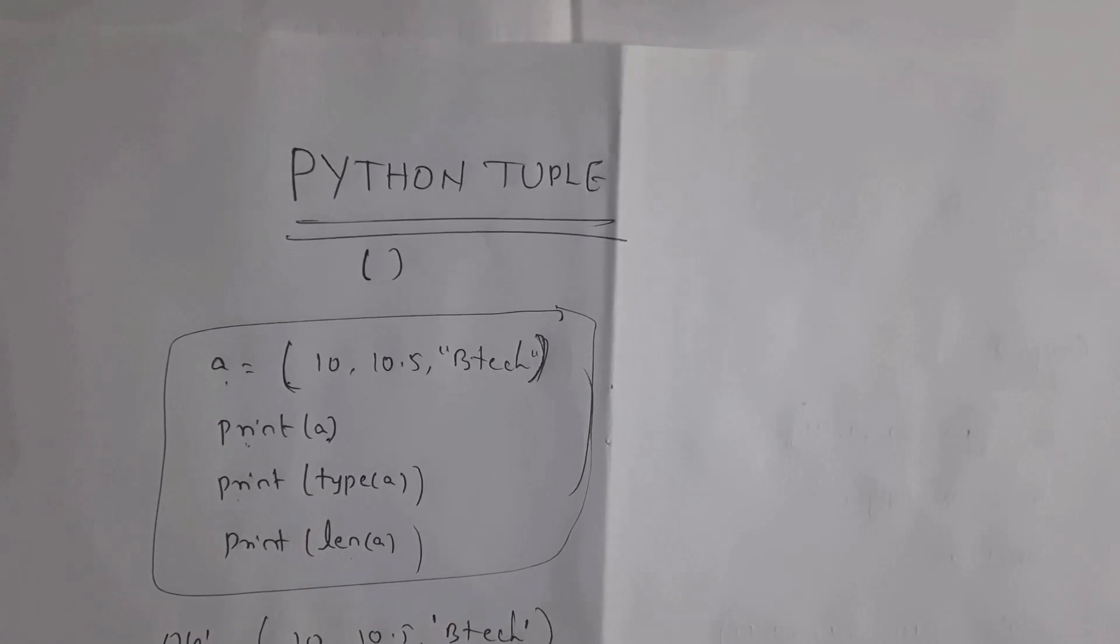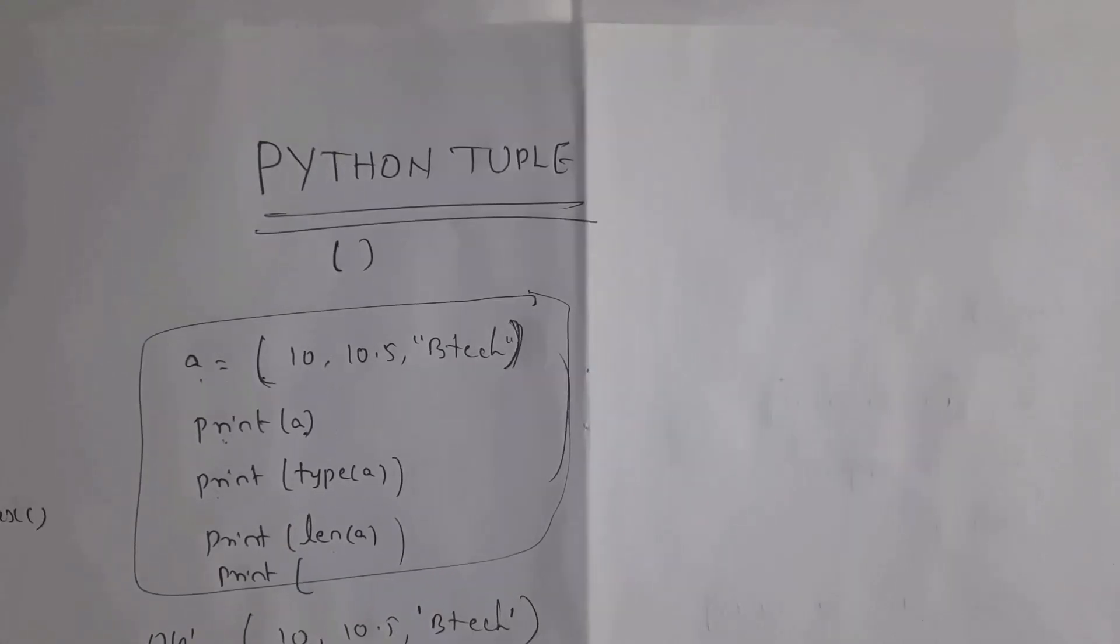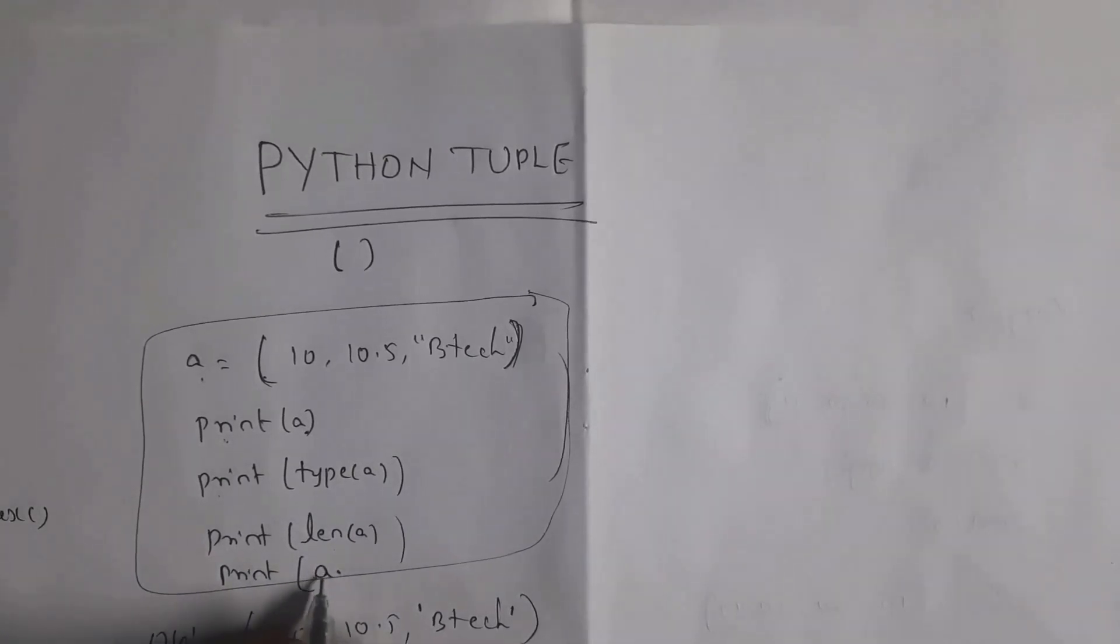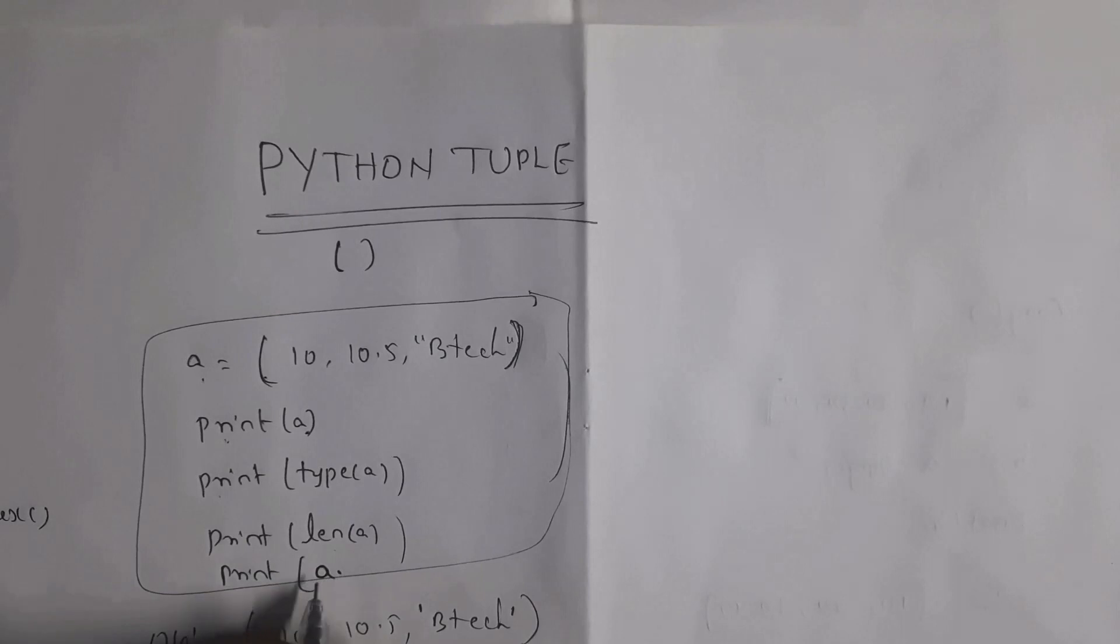You can also find index number of particular item by using index method. Just write here print a dot. I already said before for each and every method you need to give variable name first. Variable is a, so write here a dot.